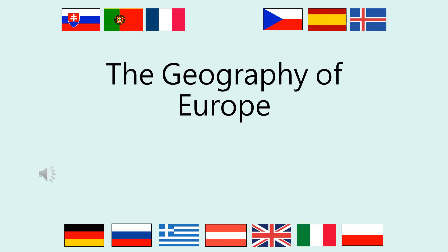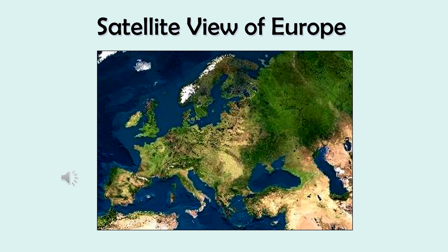Good afternoon class. This is another one of our flipped classrooms — we're going to be talking about the physical geography of Europe today. Make sure that we take good Cornell notes, and at the end of the PowerPoint presentation there will be a short quiz. We now have a satellite view of Europe.